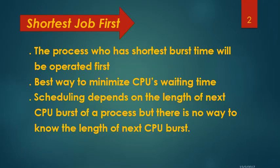Shortest Job First: the process which has the shortest burst time will be operated first. It is the best way to minimize CPU waiting time, because we can switch from the executing process at any time when a new process comes that has a smaller burst time than the executing one. So the CPU doesn't have to wait. Scheduling depends on the length of the next CPU burst of a process, but there is no way to know the length of the next CPU burst.